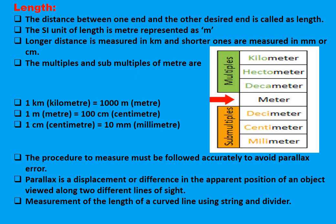The procedure to measure must be followed accurately to avoid parallax error. Parallax is a displacement or difference in the apparent position of an object viewed along two different lines of sight. The measurement of a curved line can be taken using string and a divider.